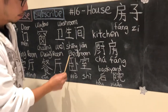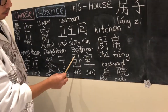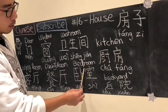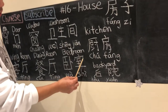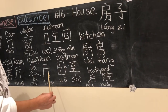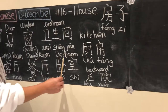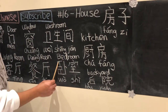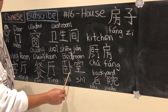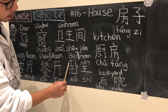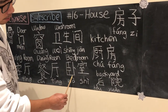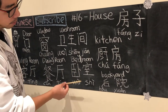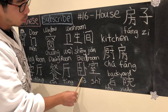Next we have the bedroom. The bedroom is where you sleep, so normally it has a door. A room with a door is called 室, which is different from 厅, which is more open. So the bedroom is called 卧室. 卧 actually means to lie down, and the character almost looks like a person lying down on a bed sideways.